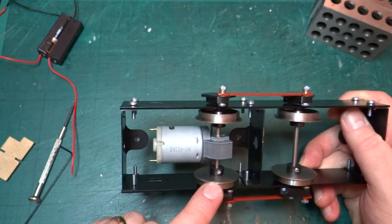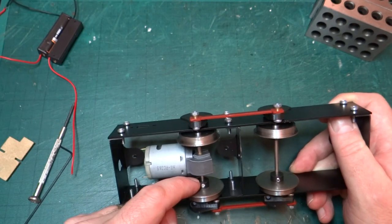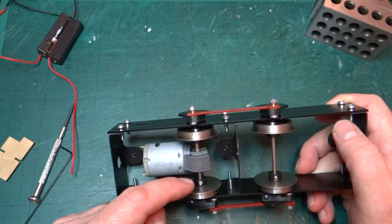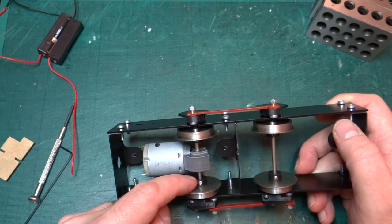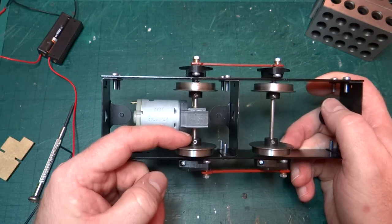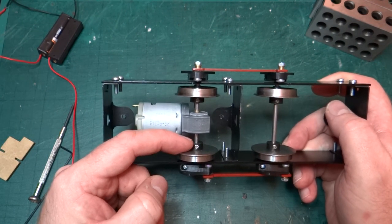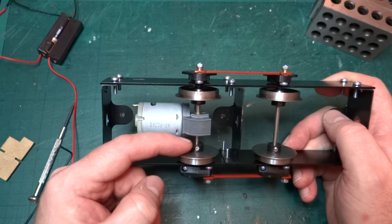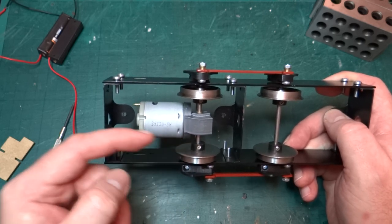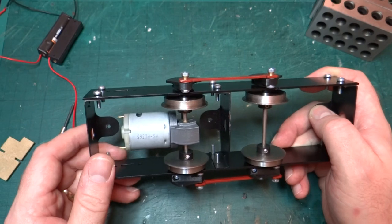So the first modification I've made is to file the grub screws down as far as necessary so that when they're tightened up, they're inside, just about inside the bush. So that they can rotate clearly against the, up against the gearbox.